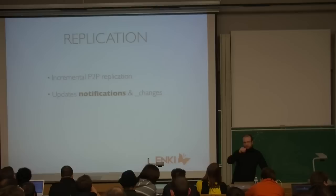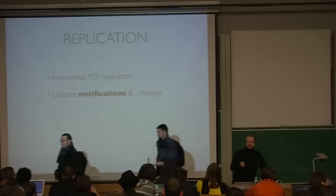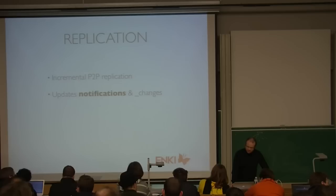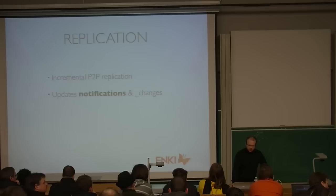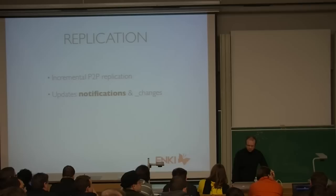Replication can happen in a continuous fashion — you can make a one-shot replication between two or three nodes, or make it continuous. This is based on the changes API of CouchDB. You can get all notifications from a database — doc creation, doc saves, new design docs — in real time. And the replicator uses this.